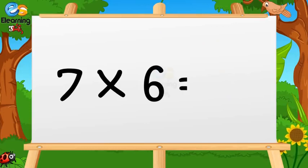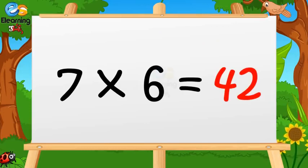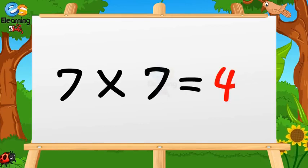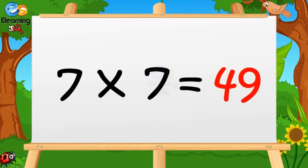Seven sixes are forty-two. Seven sevens are forty-nine.